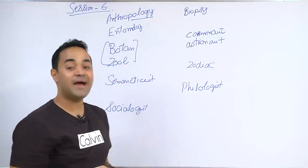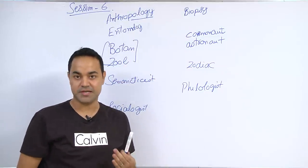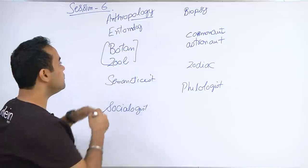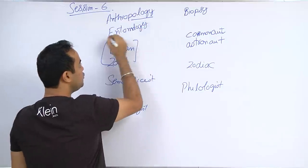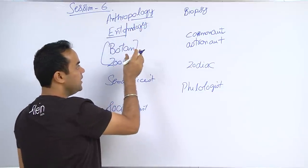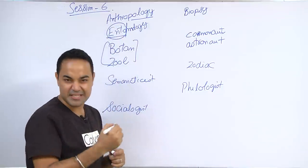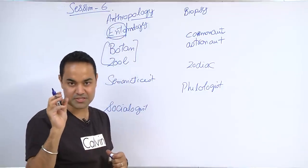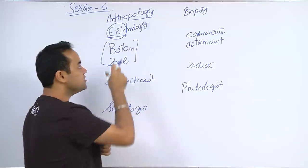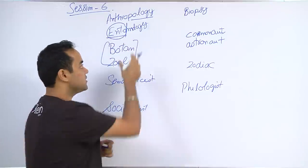Entomology. Ento means pieces. Entomology means anything which is related to insect or small body parts. It's the study of insects. Logic means study.